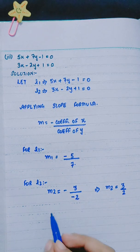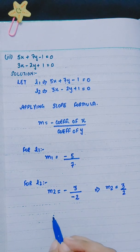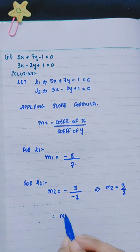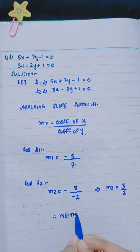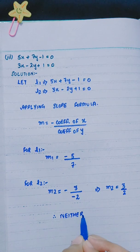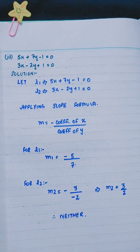So what is the answer? Since m1 is not equal to m2 and m1 is not the negative reciprocal of m2, therefore the lines are neither parallel nor perpendicular.